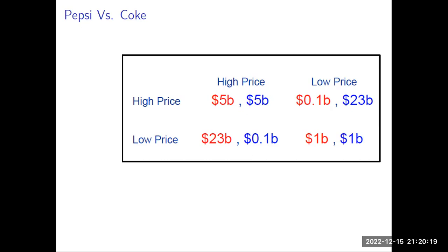If you look at this payoff matrix, the matrix explains that if both firms go for high prices, they will be earning $5 billion. But if one company keeps prices low and the other keeps prices high, the company that keeps prices high gets $0.1 billion, and the company that lowers prices gets $23 billion.